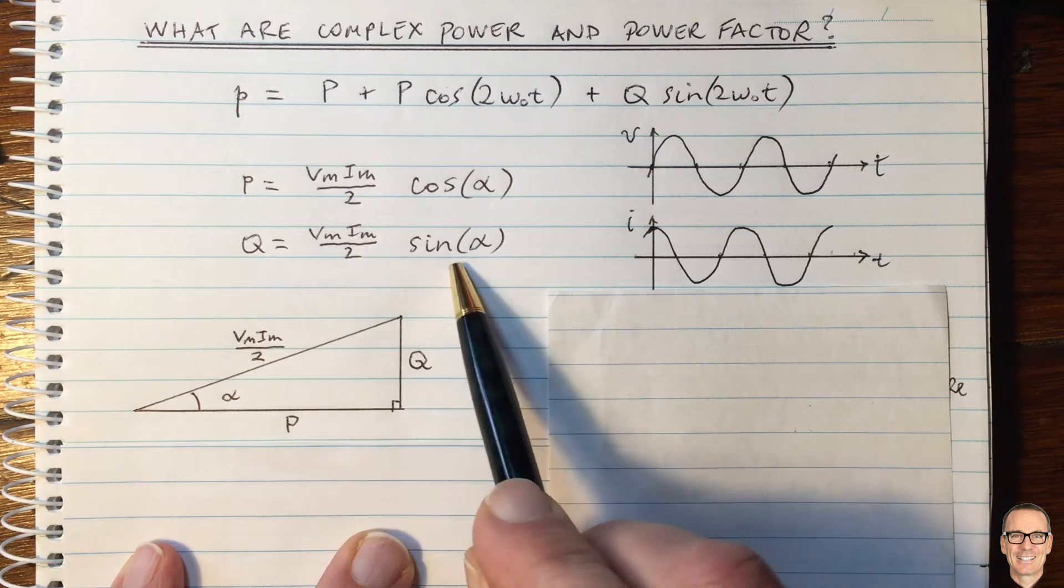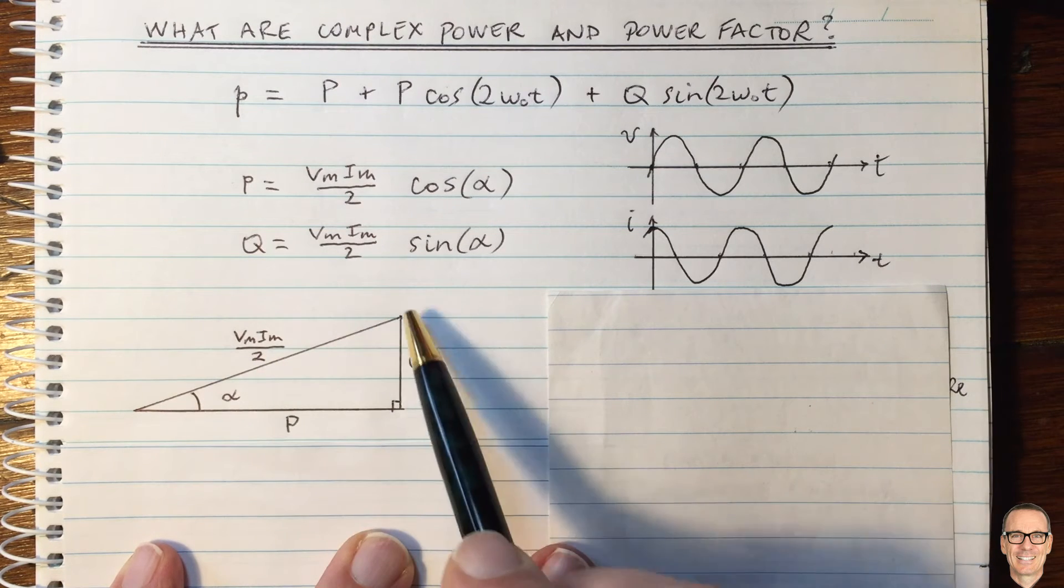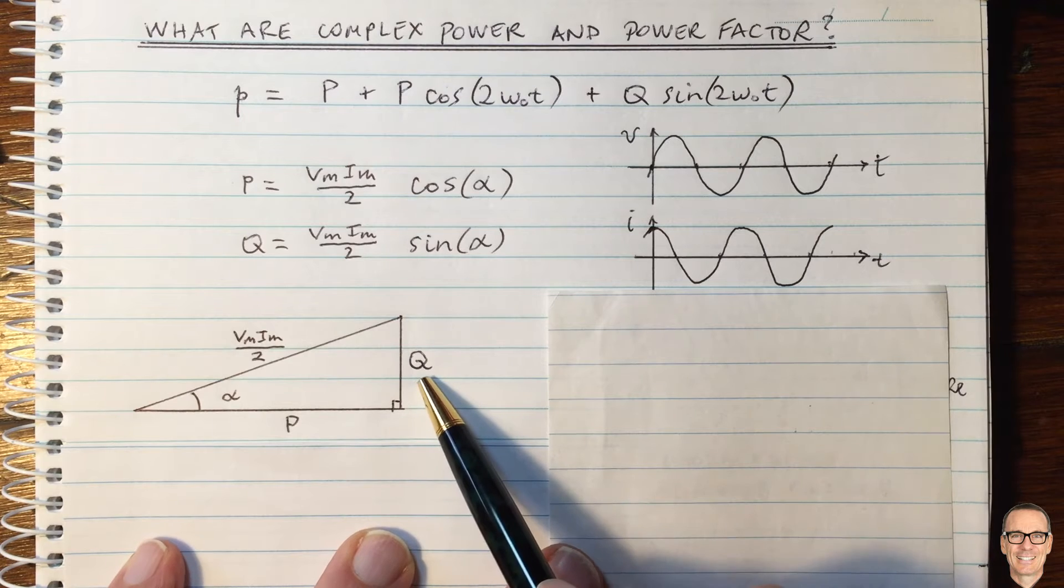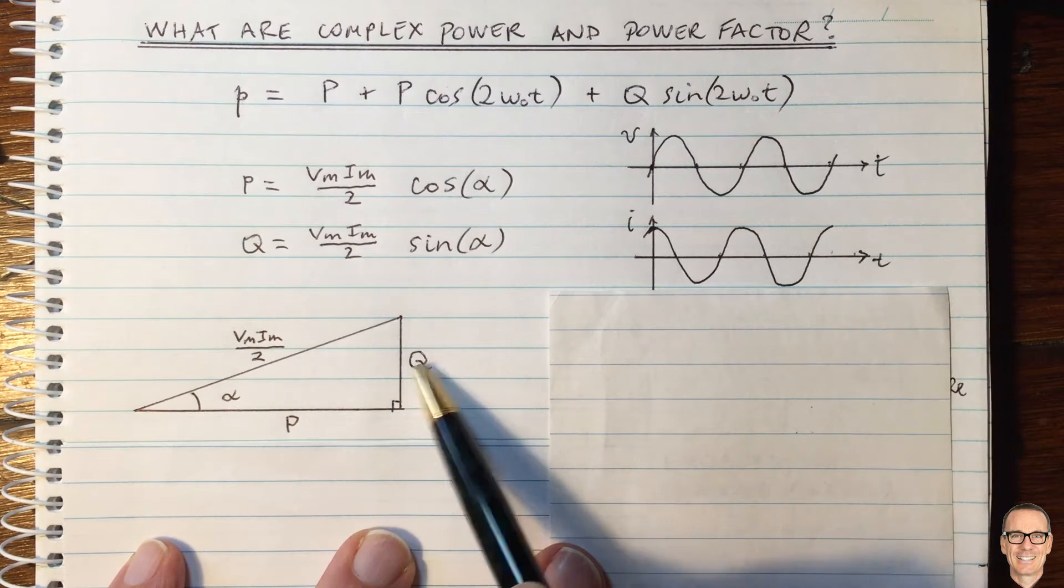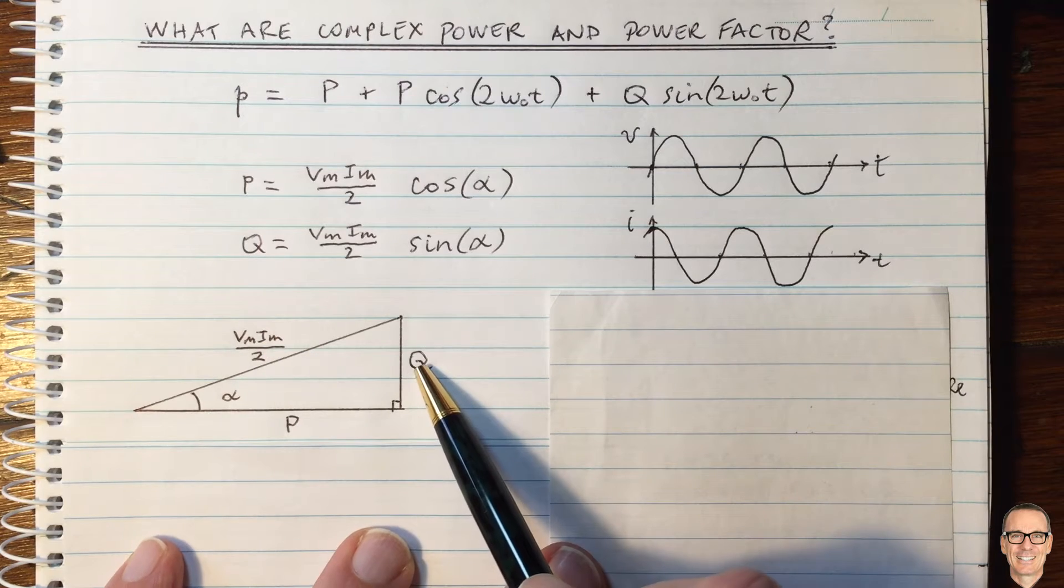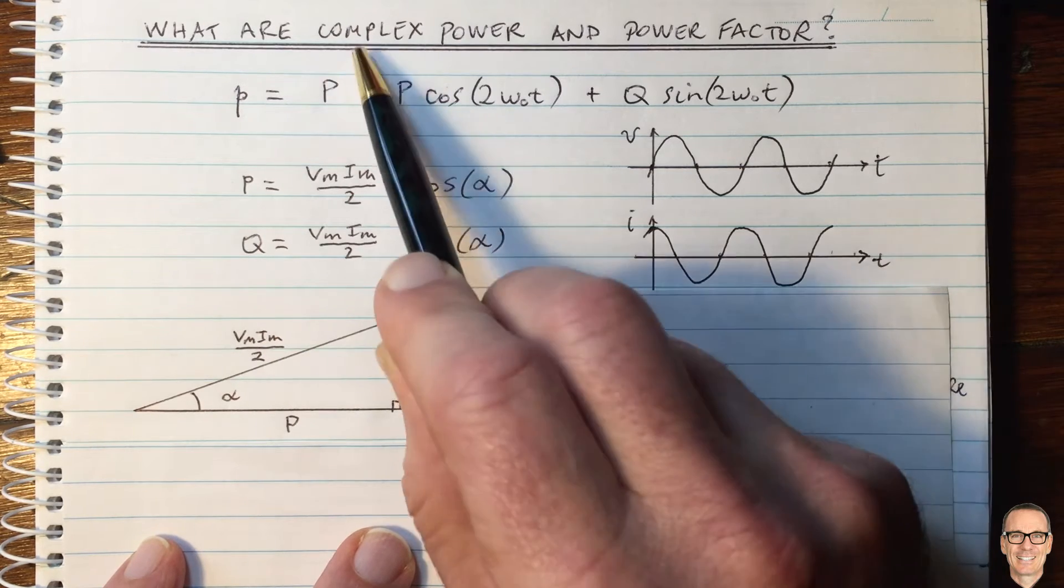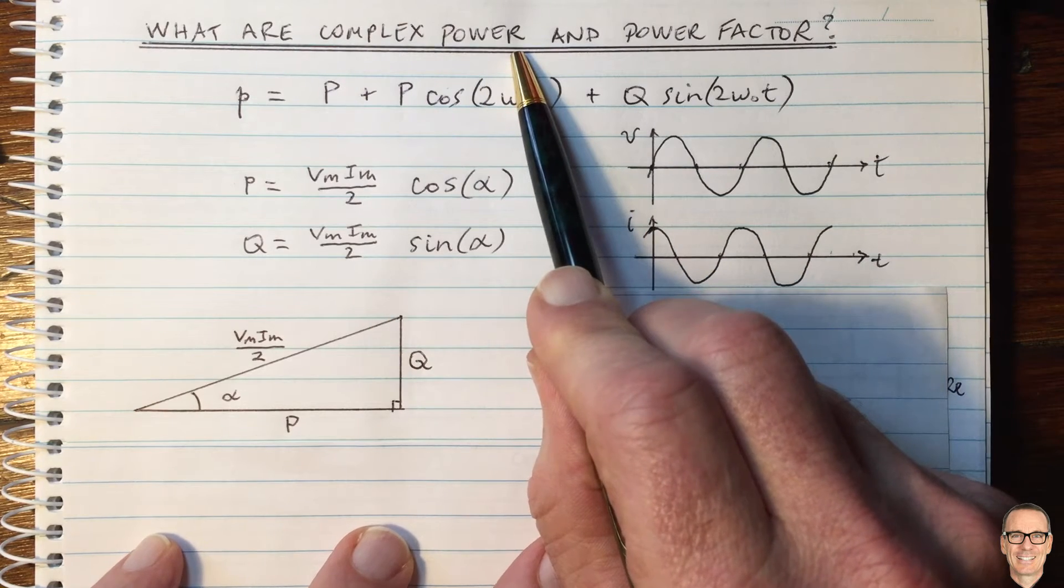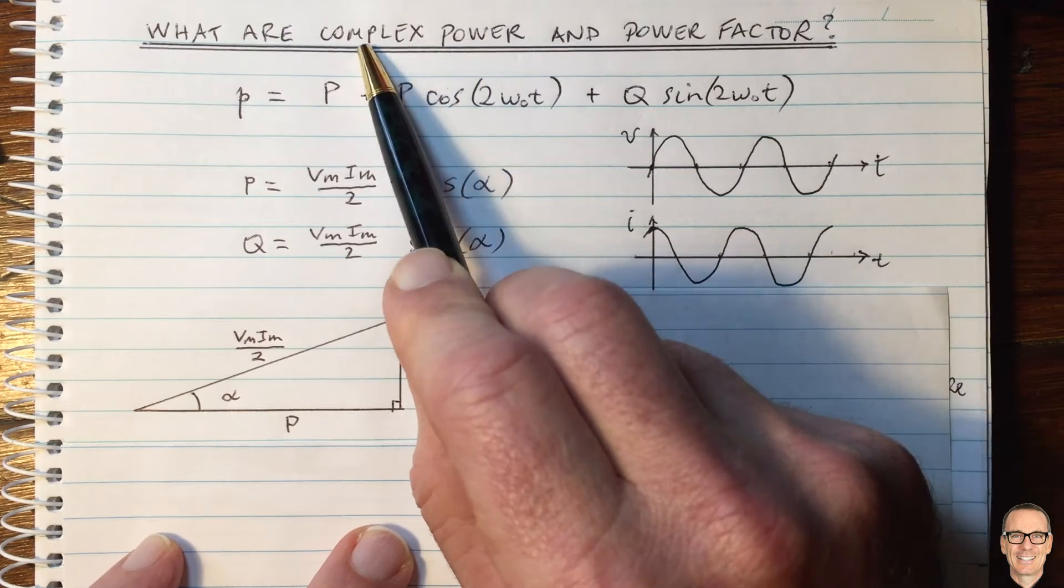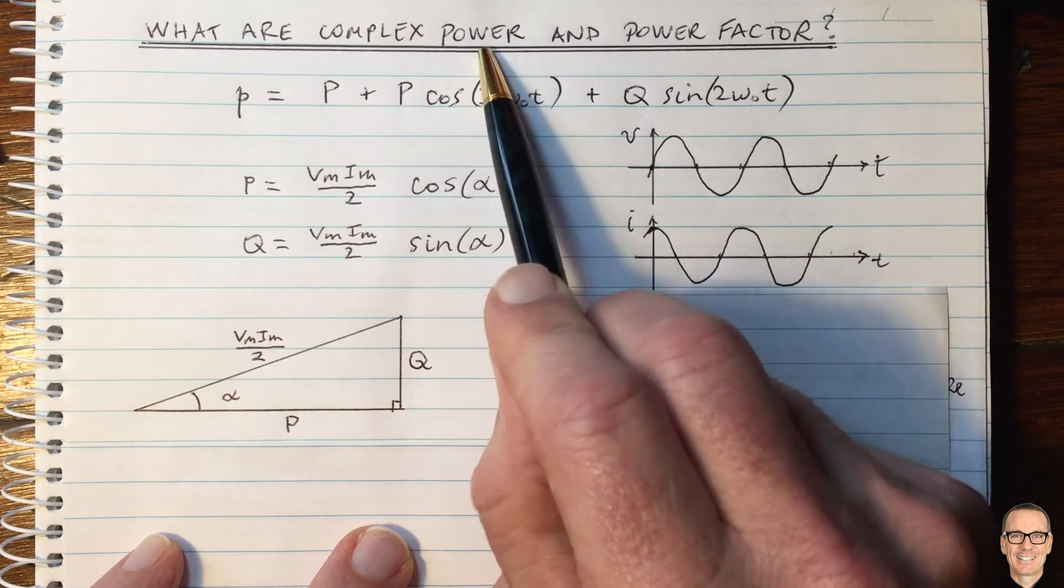If you take the sine of it, then it is this length here, which is Q. And simply because of this ability to write it in terms of a triangle, that is what leads us to the idea of using complex representation for the power, and hence we get the idea that there is complex power.